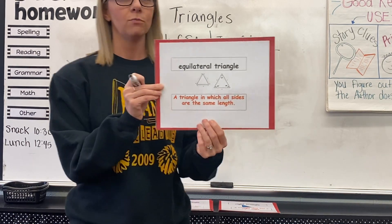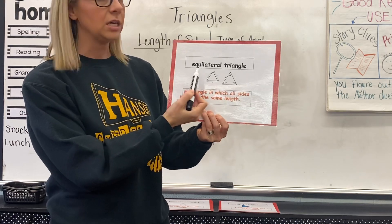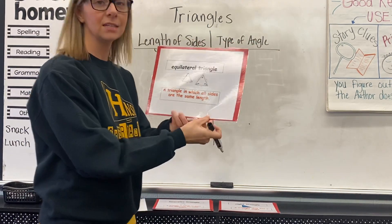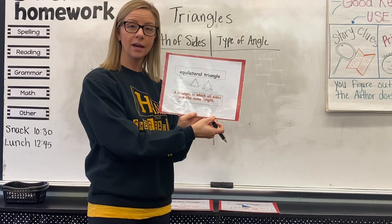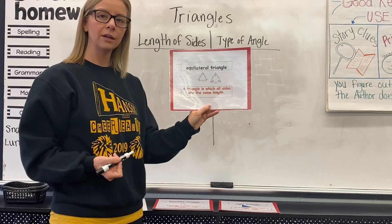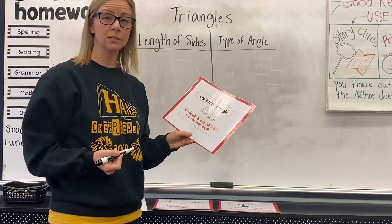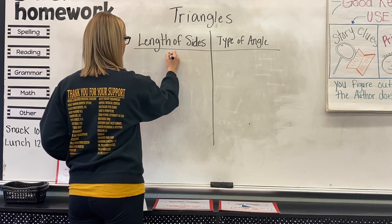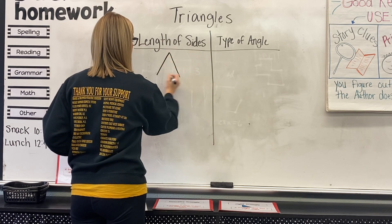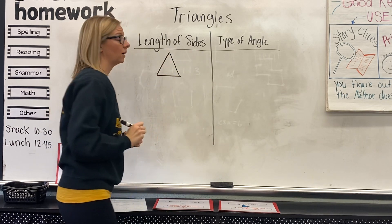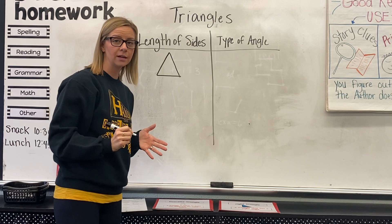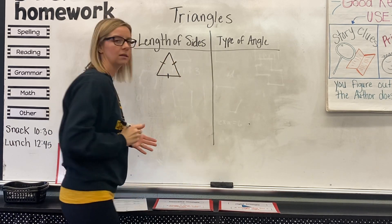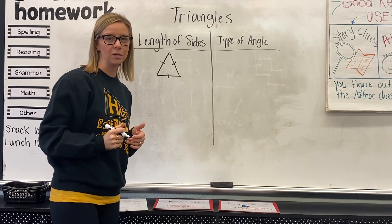You may have heard of equilateral, or at least the word equal, and that's exactly what that means — the sides are equal. An equilateral triangle is a triangle in which all sides are the same length, and it would look something like this. We can show that all the sides are the same length by putting a little tick mark on each side, just to show that they are supposed to be the same length.